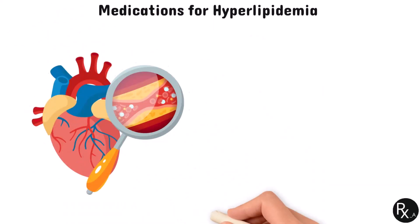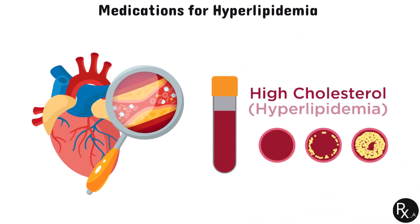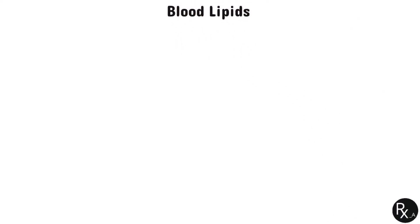Hyperlipidemia is a medical condition characterized by unusually high blood levels of fat particles known as lipids. These lipids may adhere to arterial walls and limit blood flow, which in turn leads to increasing the risk of stroke or heart attacks. The blood contains three main types of lipids: cholesterol, triglycerides, and phospholipids.